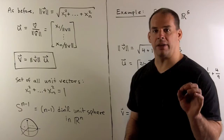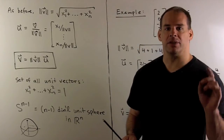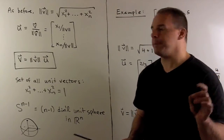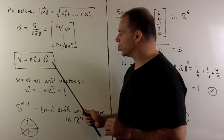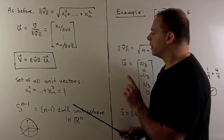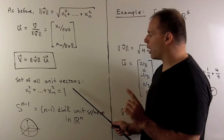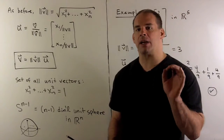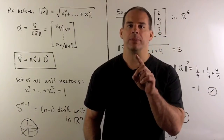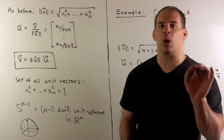Now that we have a definition of length for vectors in Rⁿ, if I have a non-zero v, we can divide by the length of v to get the unit vector that points in the same direction as v. With that, we have our factorization of v into a length and a direction. If we take the set of all unit vectors in Rⁿ — vectors whose coordinates satisfy x₁² + x₂² + ⋯ + xₙ² = 1 — this is how we define the (n−1)-dimensional unit sphere in Rⁿ. We can't visualize this object since we can only see in 3D, but we know its points as those that are distance one from the origin in Rⁿ.